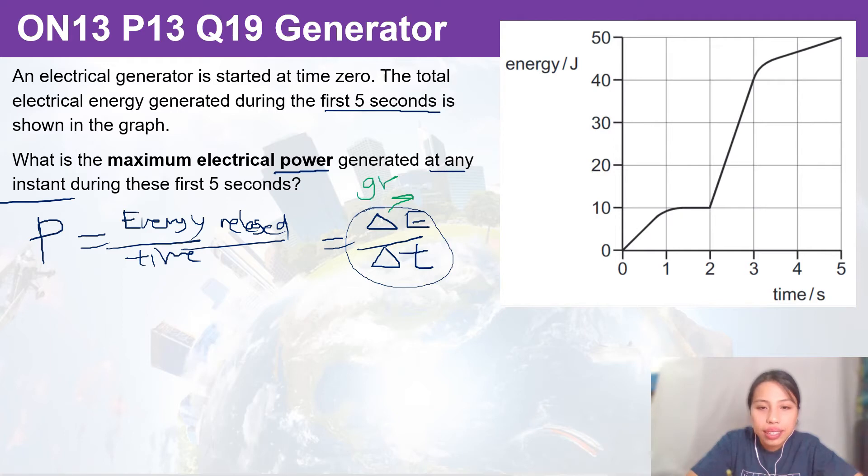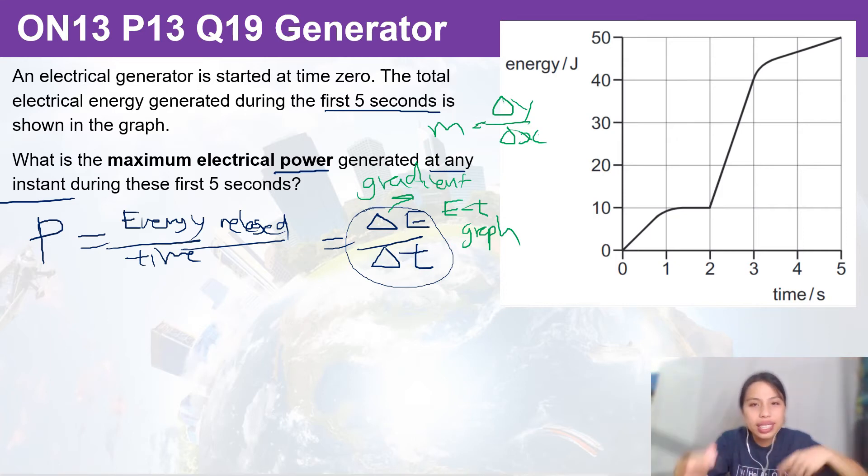You know how like dy/dx, change in y, is the gradient m? So in this case, if we can find what is the maximum gradient of this graph, where is it the steepest, that will be the maximum power.